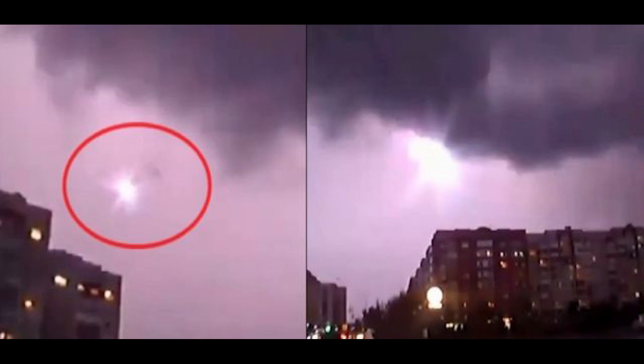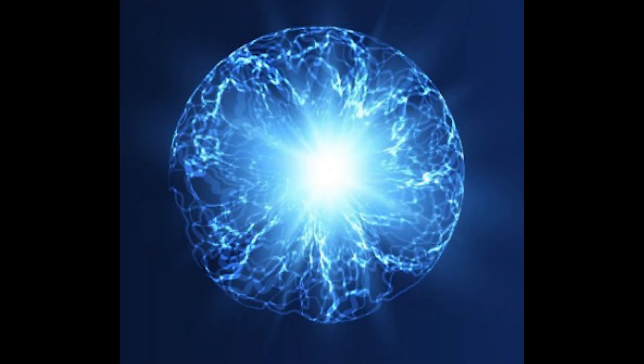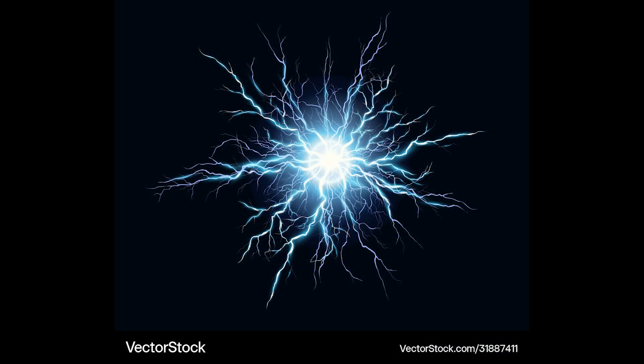Ball lightning is a rare and poorly understood phenomenon characterized by the appearance of spherical or globular luminous objects that float, hover, or move erratically through the air. These luminous spheres can vary in size from a few centimeters to several meters in diameter and typically last only for a few seconds to a few minutes before dissipating or disappearing entirely.